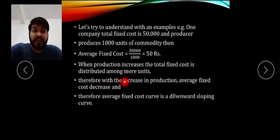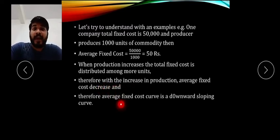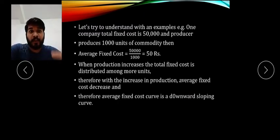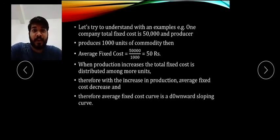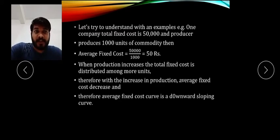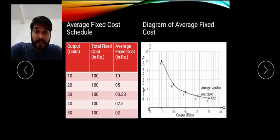Therefore, with an increase in production, average fixed cost decreases. Therefore, the average fixed cost curve is a downward sloping curve. When there is an increase in production — when the number of units produced is more — you find that average fixed cost keeps getting reduced. It is decreasing. We also have a schedule and a diagram to illustrate this.